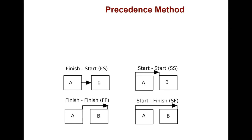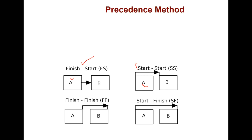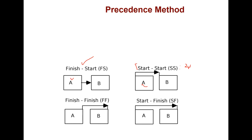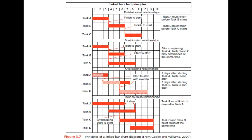The most common activity relationship is finish-to-start, meaning the preceding activity A must finish before activity B starts. Another common one is start-to-start — once work on activity A has started, work on B can start simultaneously, sometimes with a time lag (e.g., two weeks). There is also a finish-to-finish relationship where the finish of two activities are tied. Start-to-finish relationships are not common.